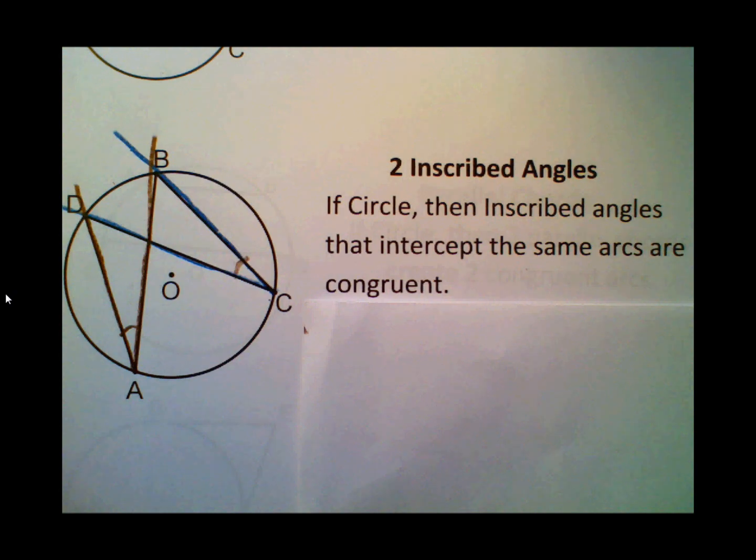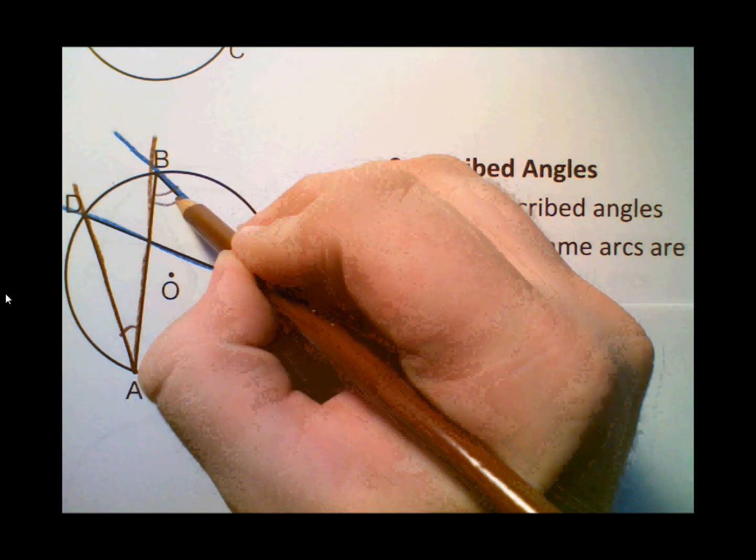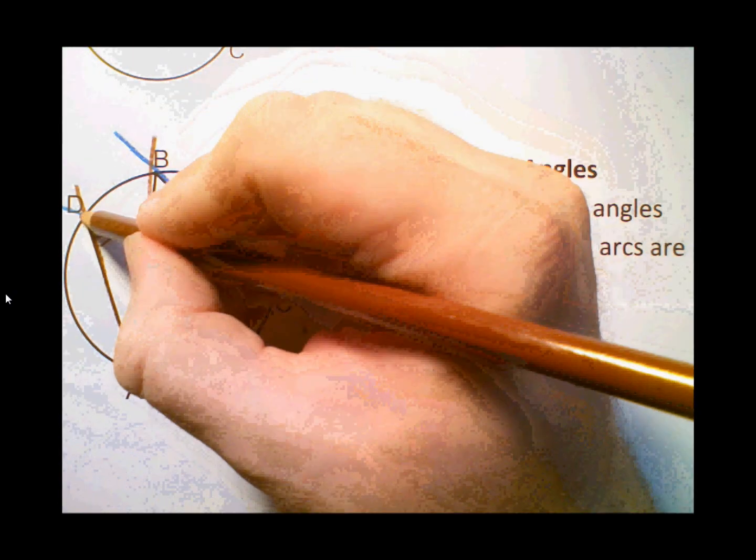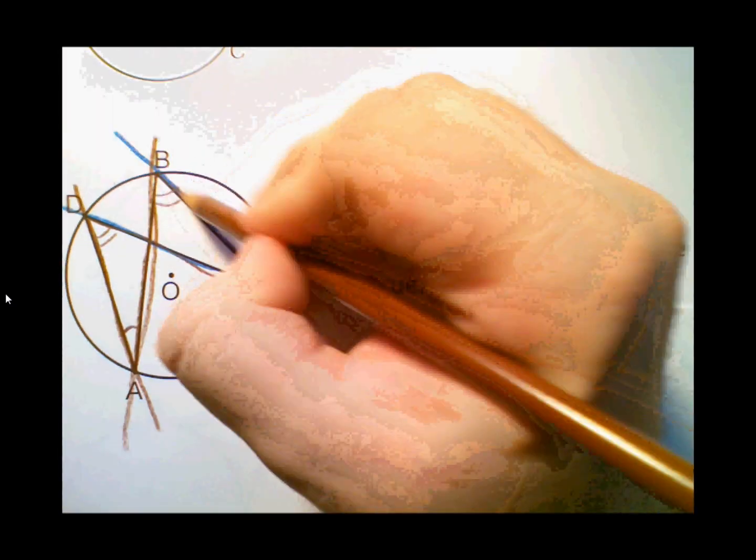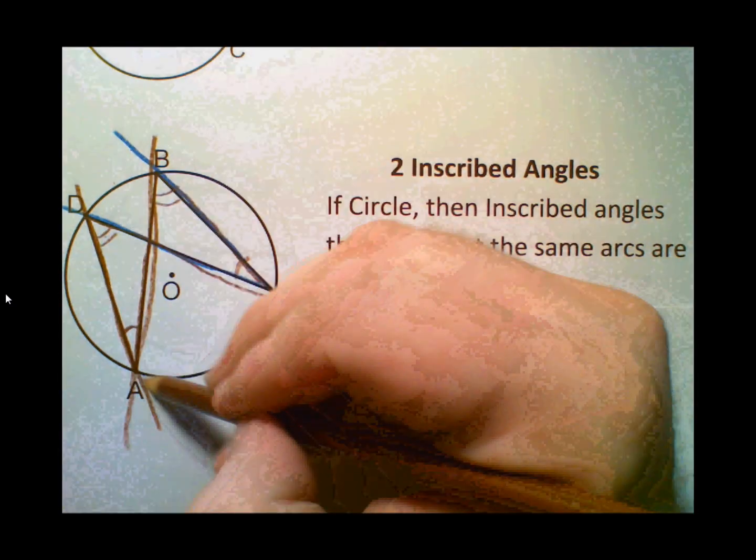Okay, now in this also the same example, angle B and angle D are going to be congruent because of the same reason. They're both intercepting arc AC. So they're both going to be half of whatever AC is.